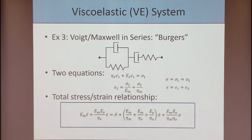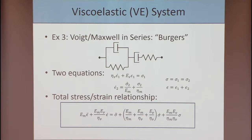You can imagine continuing this process. For example, take a Voigt and a Maxwell element and put them in series — this is called a Burgers model. Again, you use these rules to eliminate individual stresses and strains and get a total stress-strain relationship. In this case we get a second-order linear differential equation. The pattern is that we always get linear differential equations whose coefficients are rational functions in the unknown parameters.